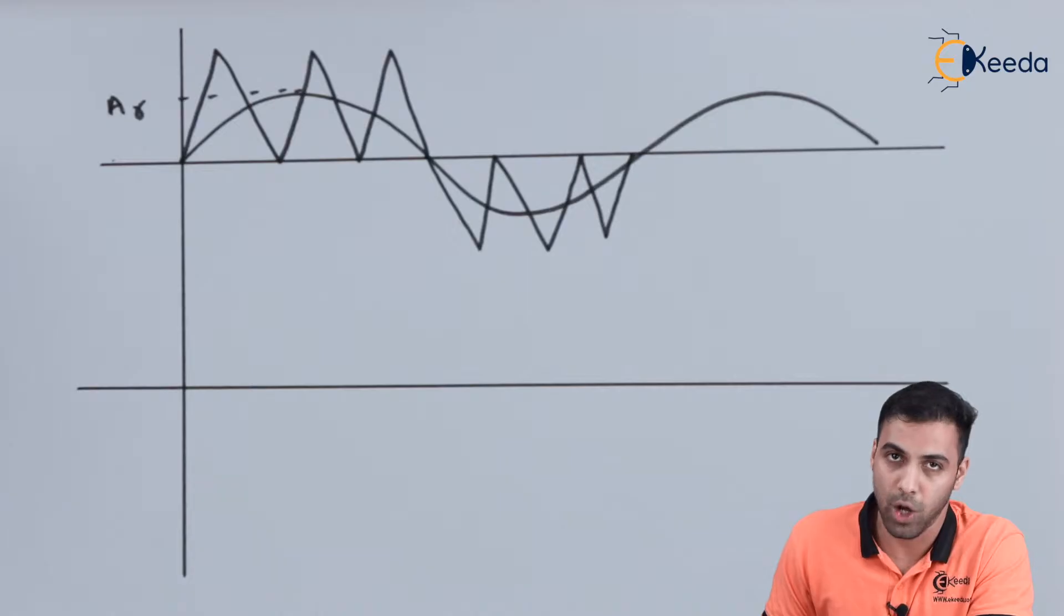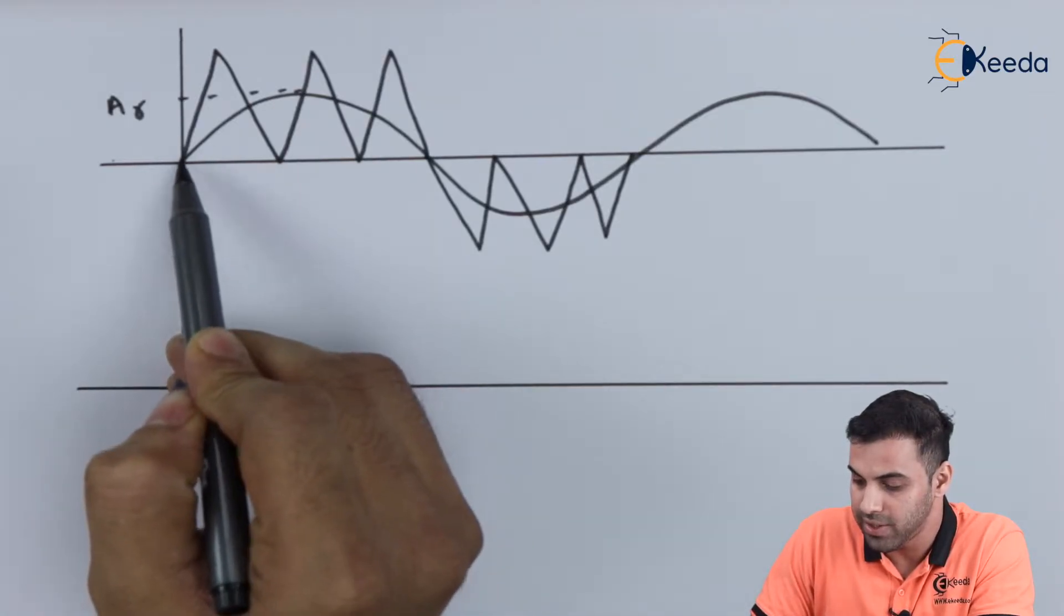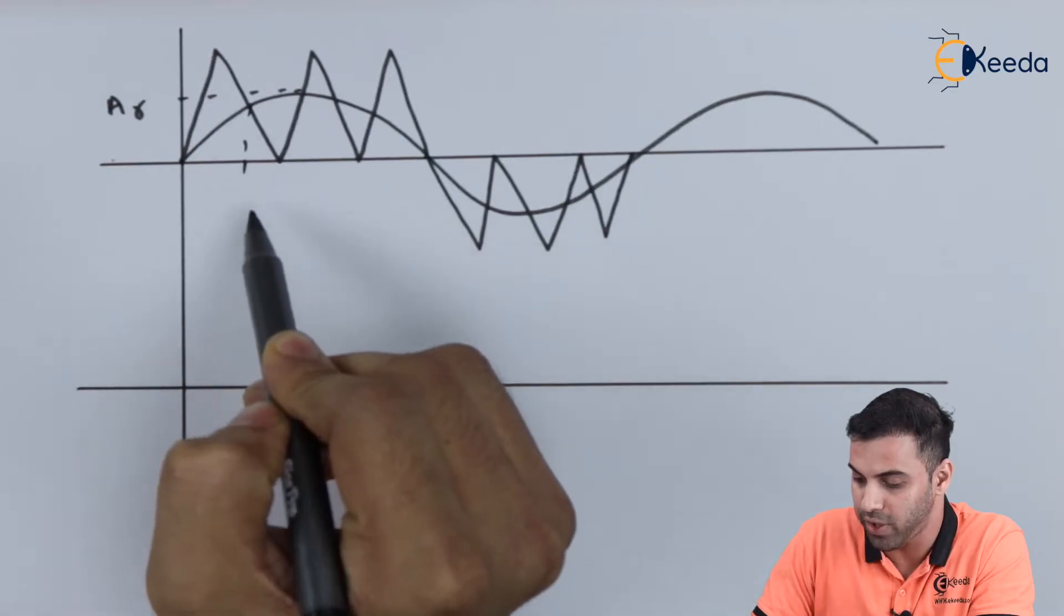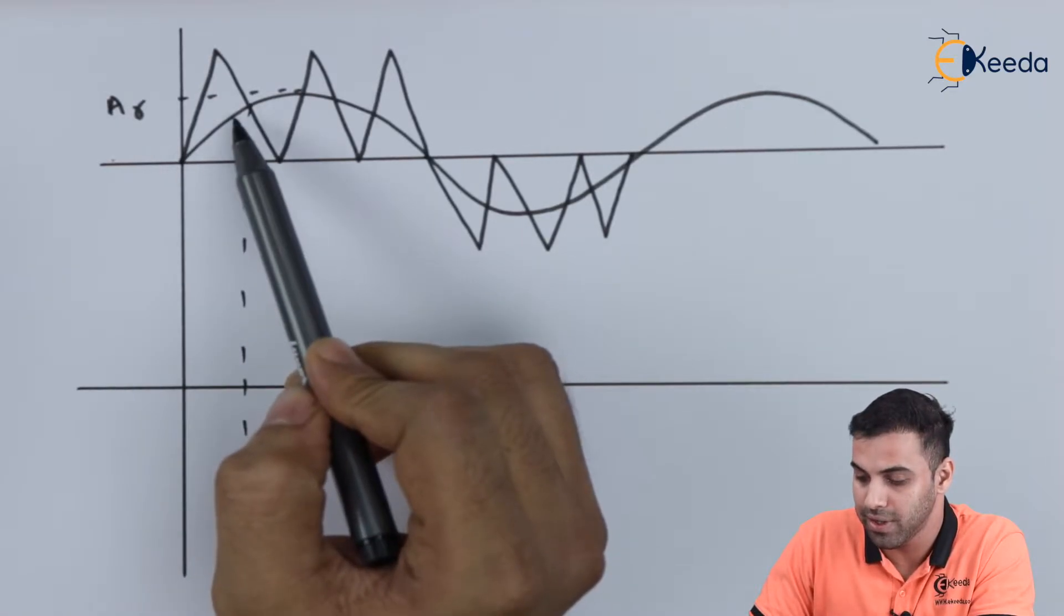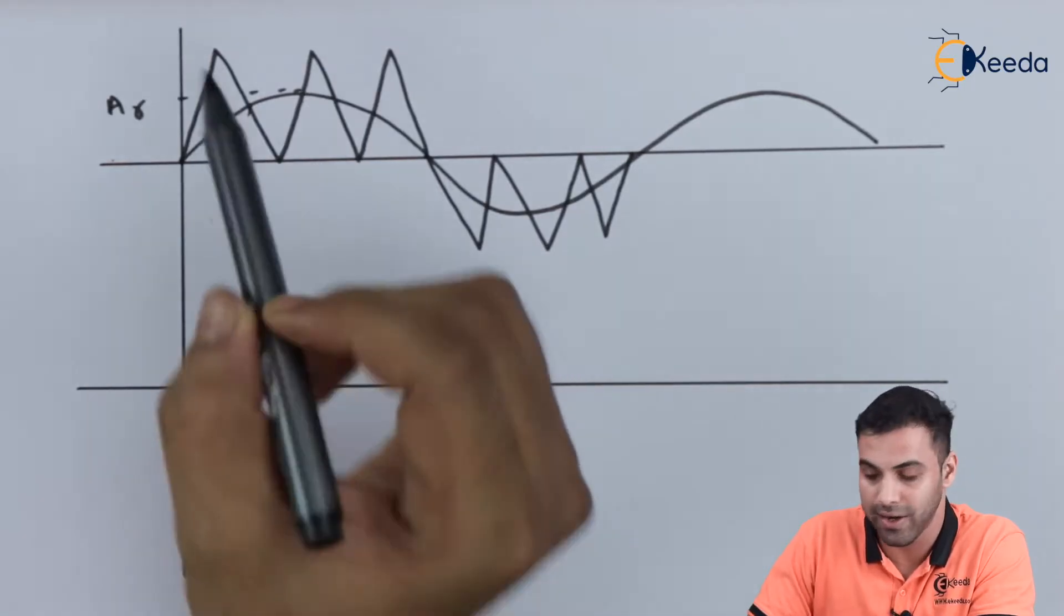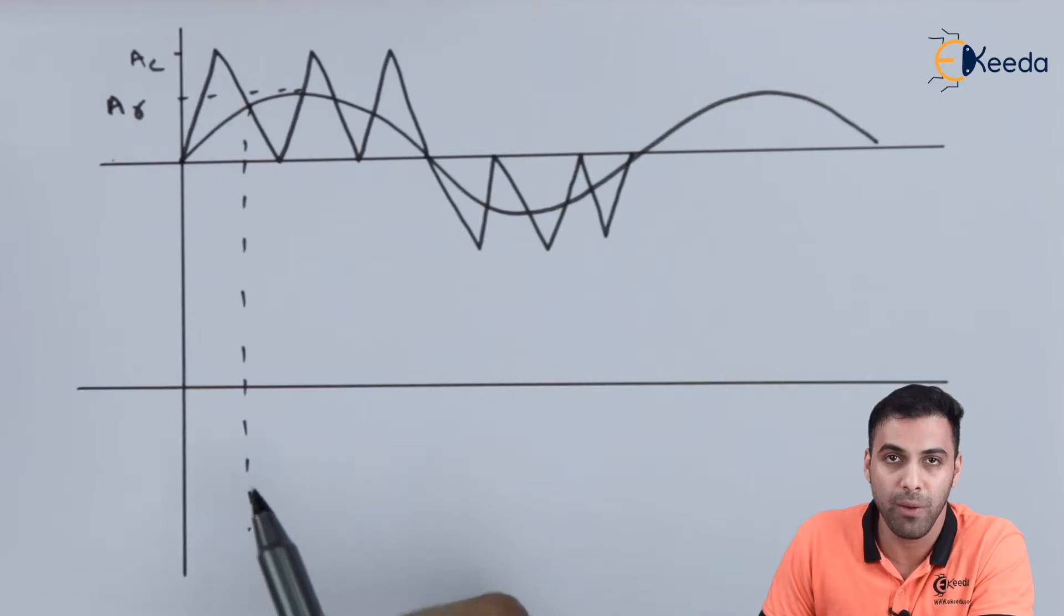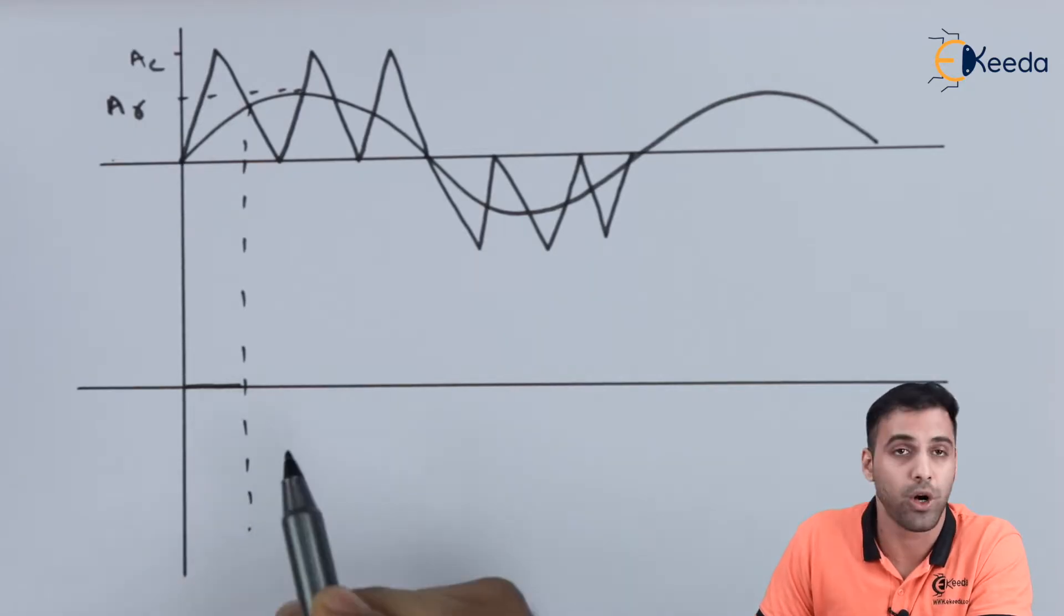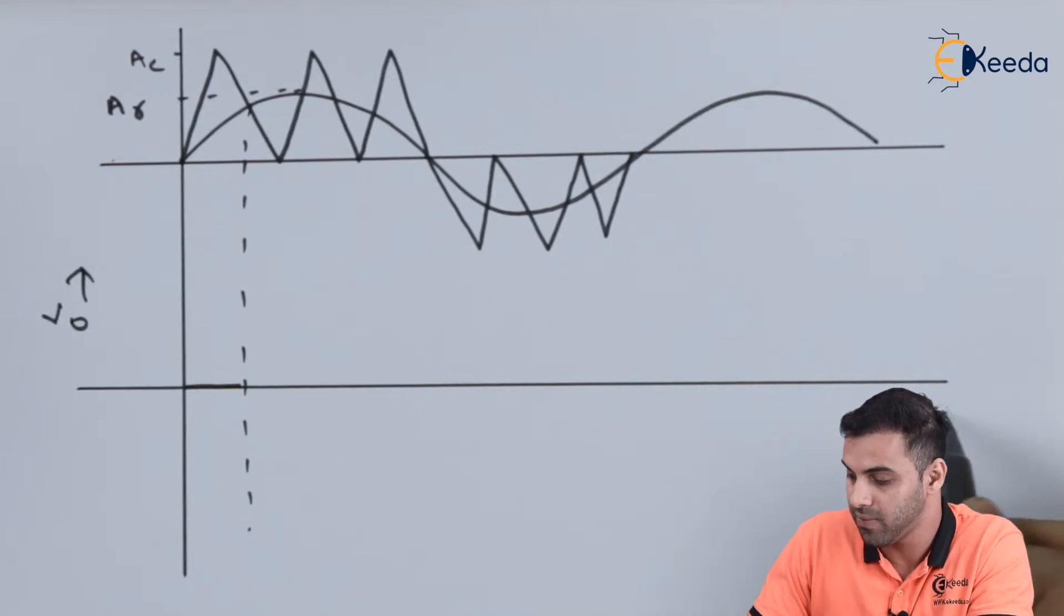So as per the comparator operation, here from the time interval this to say this point as the reference signal is less than the carrier signal where this is the carrier signal, so we will be getting a zero output. As if we draw a graph between the output voltage and the time.